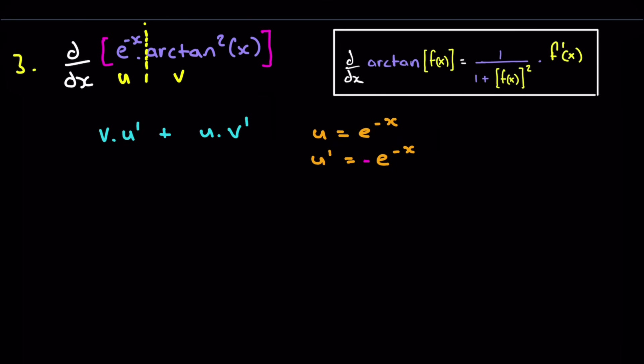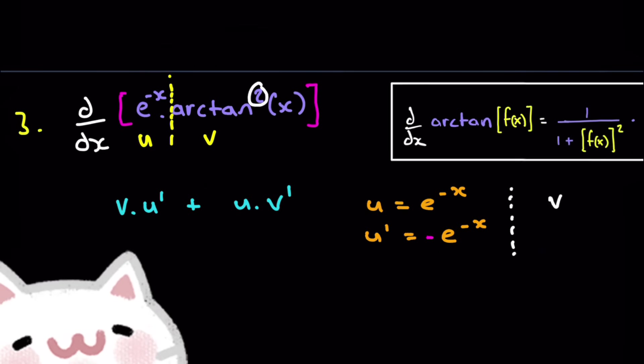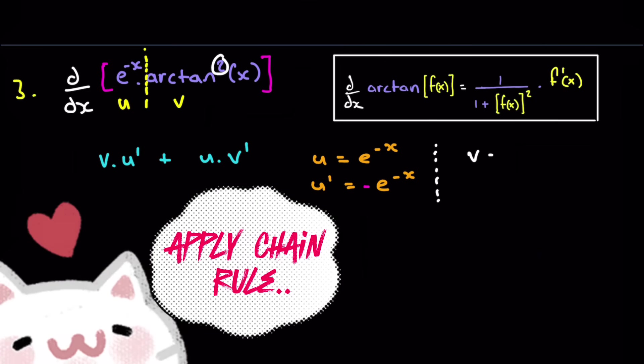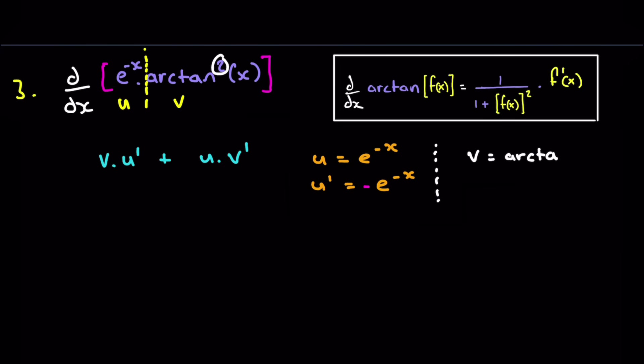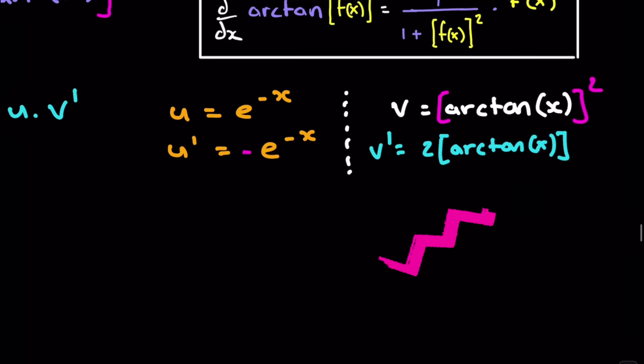And then we have v. So v is going to be all of this. But remember, we have it squared. So there's going to be a chain rule element here. So we have v is arc tan of x, and this whole thing is squared. So when we differentiate that, we're going to get 2 times, now this thing in the brackets will stay the same, which is arc tan x, times by the derivative of the bracket. Now, the derivative of the bracket is actually going to be this up here.